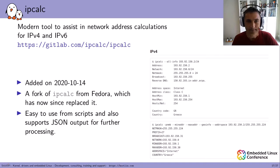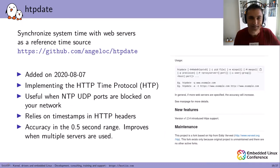The next one is HTTPDates. It synchronizes the system time with web servers as a reference time source, implementing the HTTP time protocol. It's useful when NTP UDP ports are blocked on your network, as it relies on timestamps in HTTP headers. The accuracy is not as good as NTP — it's in the 0.5 second range — but it can improve when multiple servers are used.